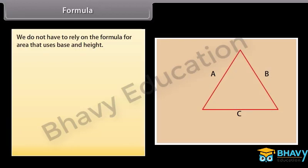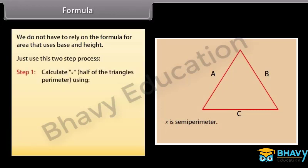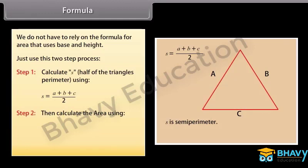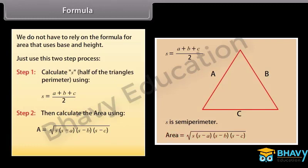The figure illustrates the general formula where S represents the semi-perimeter of the triangle. We use a two-step process. Step 1: Calculate S, half of the triangle's perimeter, using S = (A + B + C) / 2. Step 2: Calculate the area using A = √(S × (S − A) × (S − B) × (S − C)), where A, B and C are the sides of the triangle.